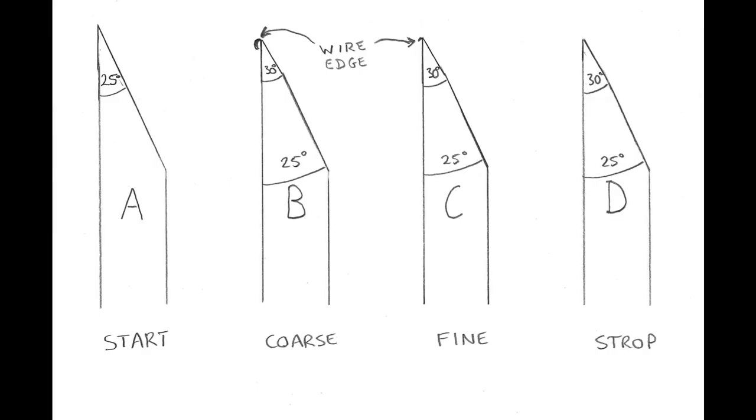This now leaves our chisel at stage D with the wire edge removed and the bevel polished on the strop.